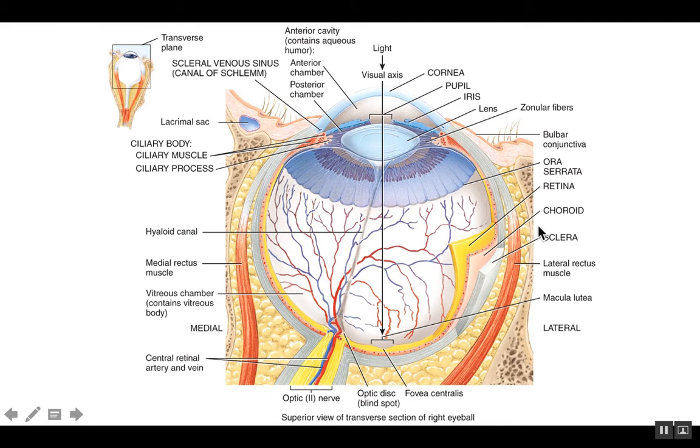But let's work our way superficial to deep. On the outside of the eyeball, you'll notice a lot of adipose tissue located in the back of the eye. That's going to protect a lot of the muscles as well as the optic nerve. Embedded inside this fat, we see a couple muscles, lateral rectus and medial rectus.